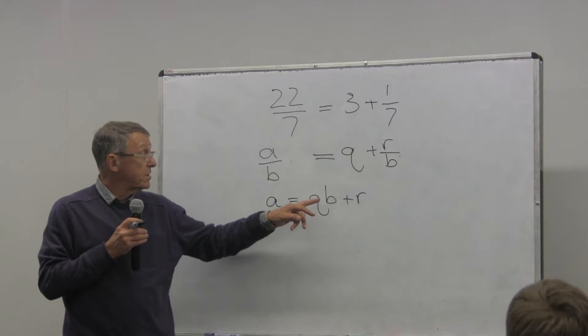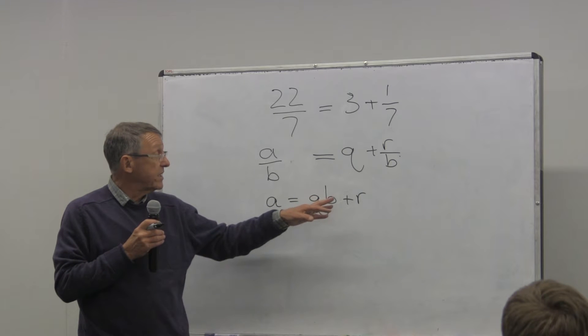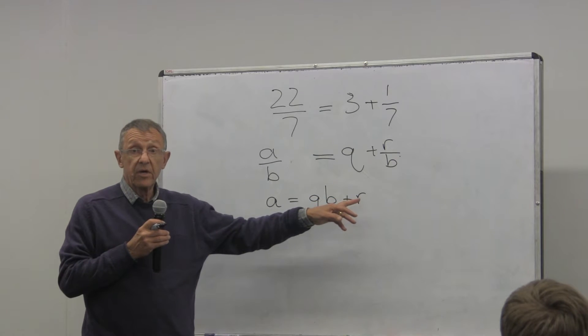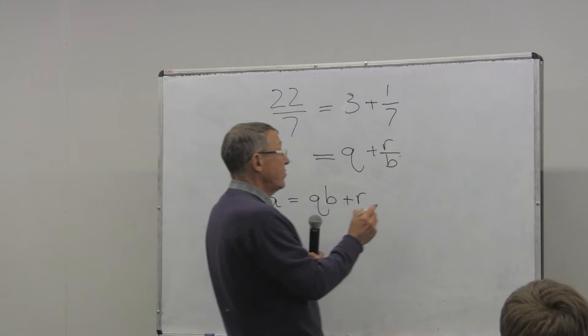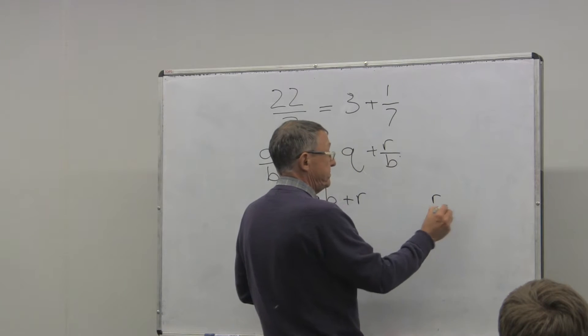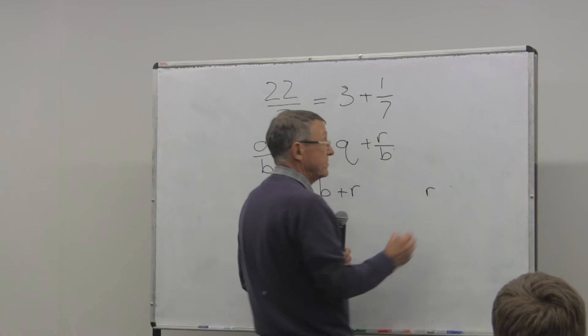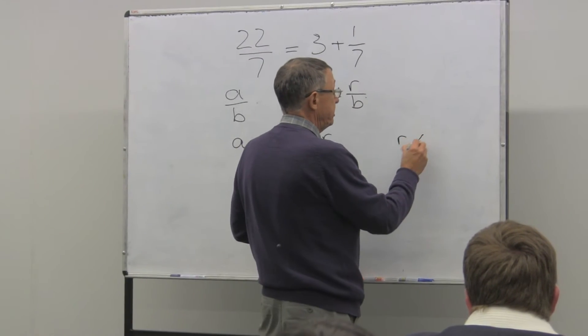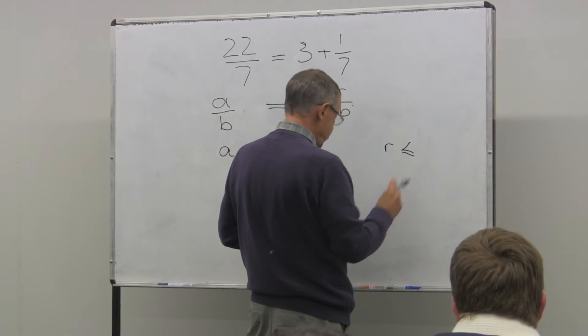Q is the quotient, B is the divisor if you like, and R is called the remainder. And what do you know about R? Must be less than B, strictly.